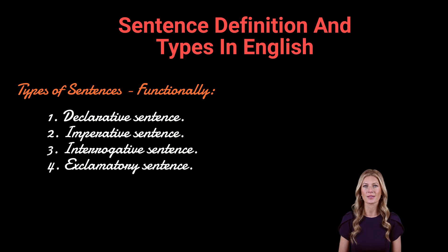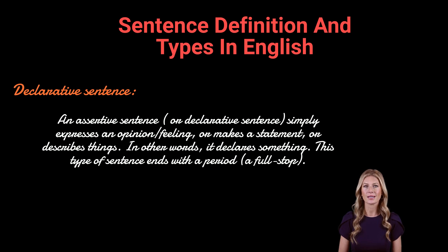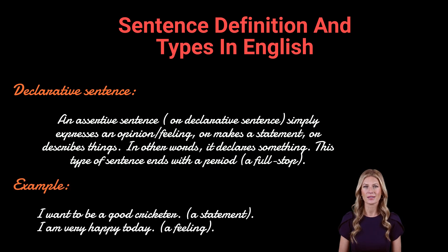Types of sentences functionally: functionally, sentences are of mainly four types. An assertive sentence or declarative sentence simply expresses an opinion, feeling, or makes a statement, or describes things — in other words, it declares something. This type of sentence ends with a period. Examples: 'I want to be a good cricketer' — a statement. 'I am very happy today' — a feeling.